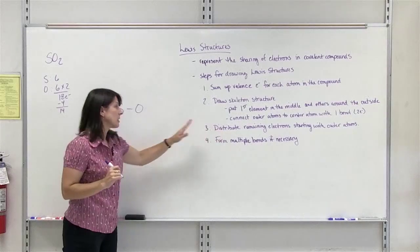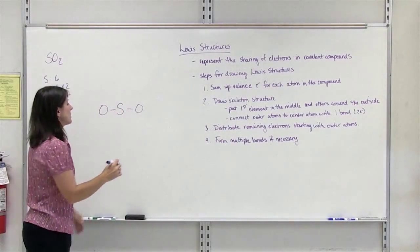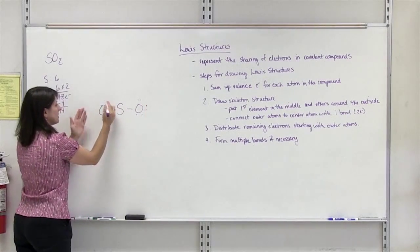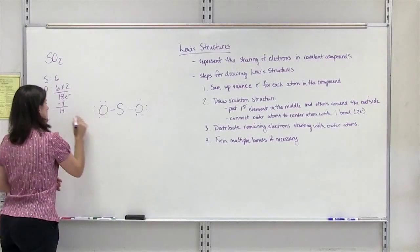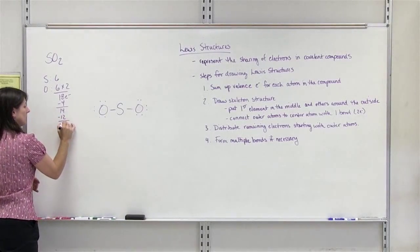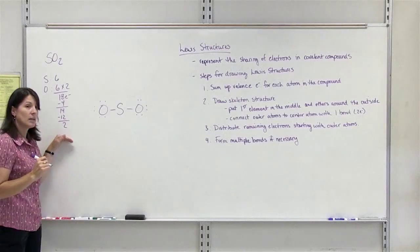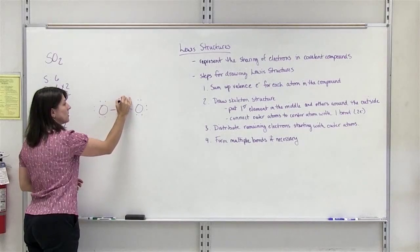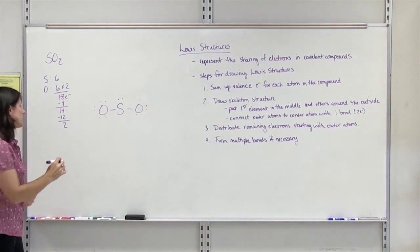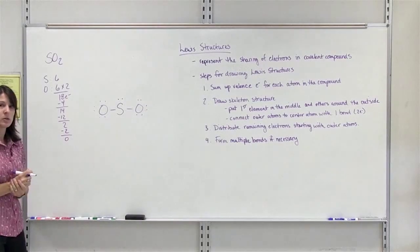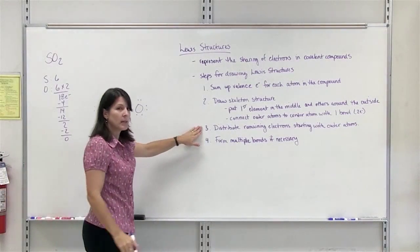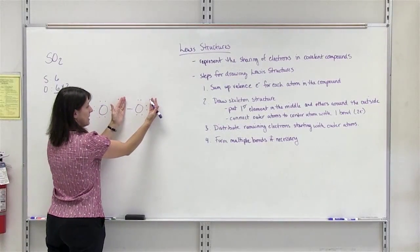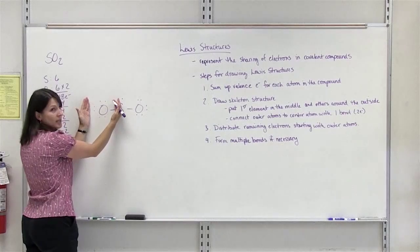We need to distribute the remaining electrons, starting with the outer atoms first. Each oxygen already has 2 from the bond and needs 6 more to get 8. After giving 6 to each oxygen, we've used 12 electrons. We have 2 left over. The leftovers always go to the center atom — we give those 2 to sulfur. We've now distributed all the electrons. Does everybody have 8? Both oxygens have all 8.